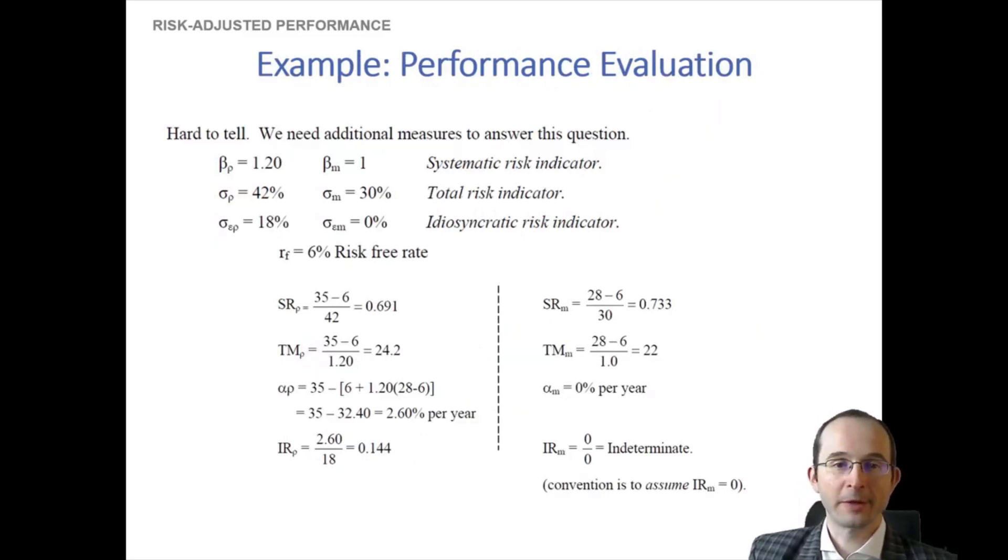Well, first of all, we probably need to know more things about this portfolio, because remember for the Treynor ratio, we need to know betas. For the information ratio, we need to know idiosyncratic risk. And for the Sharpe ratio, we need to know total risk. But we can calculate these if we actually fit a single index model in this case. Remember, that will allow us to decompose total risk into systematic and idiosyncratic risk. We also need to know what the risk-free rate is. But that is easily enough done, we can just look at the yield on treasury bonds.